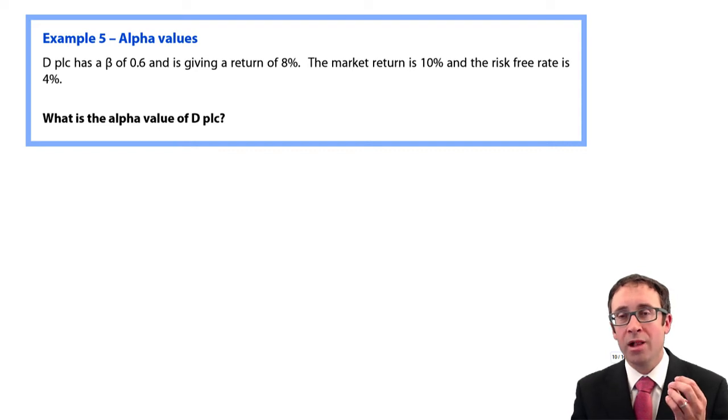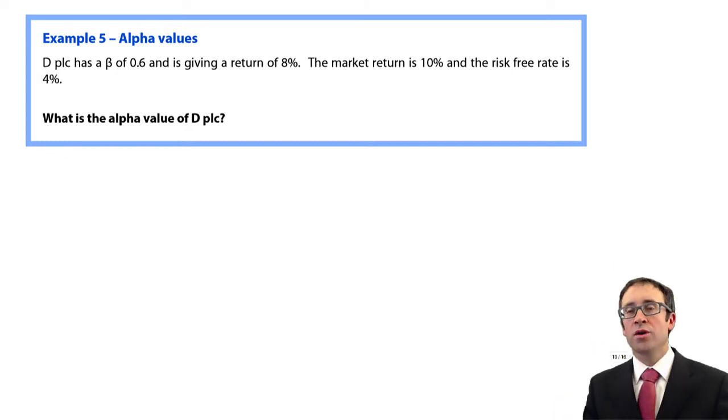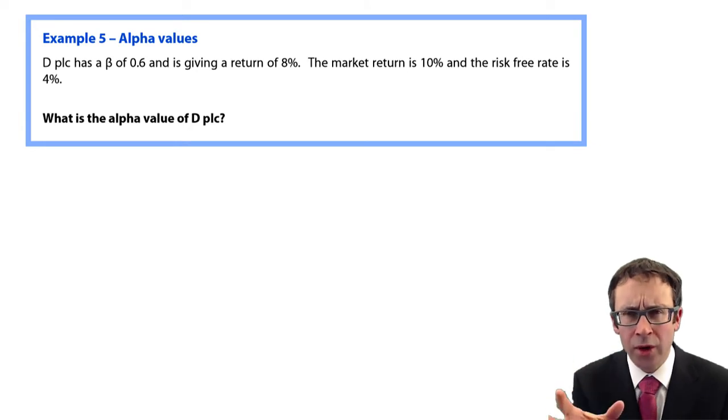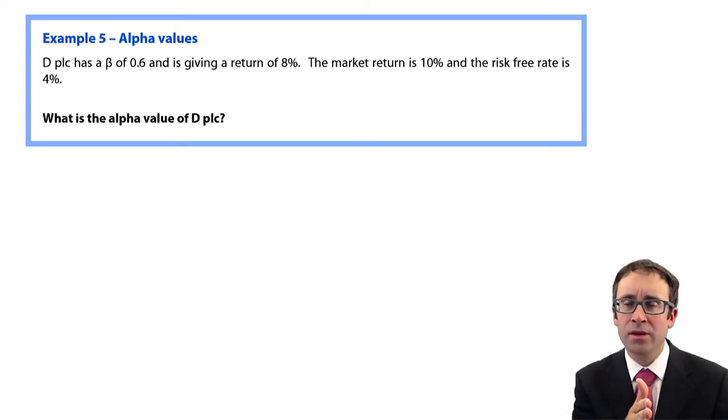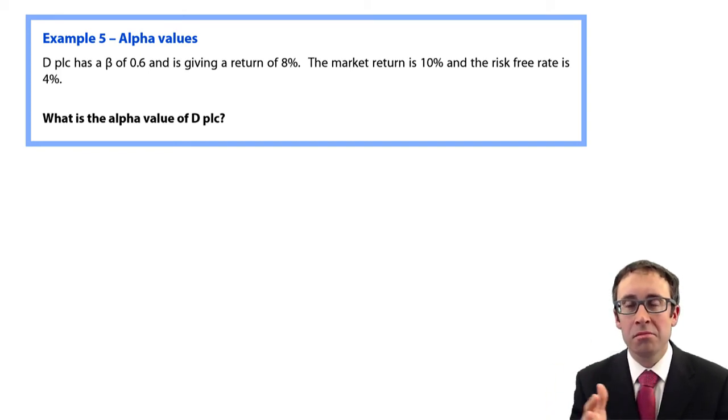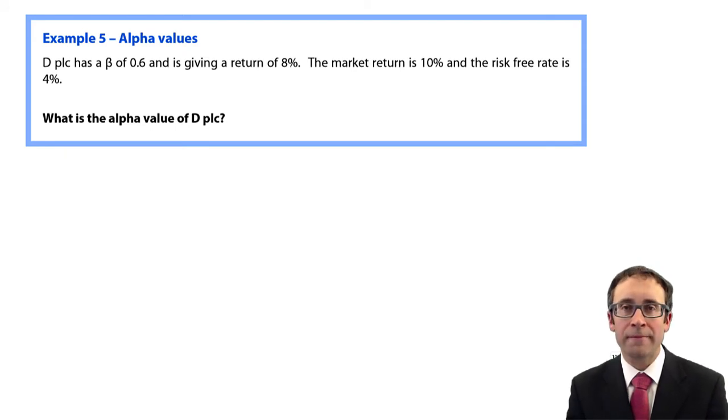As well as knowing what the alpha value is in terms of how to calculate it, you would also then be expected to interpret it. If your actual return is greater than your theoretical return, then surely you'd want to buy into that investment. So if it is a positive alpha value, we will buy the shares. But if the actual return is less than what your theoretical return is stating, then that's a negative alpha value and you would not buy that investment. And if you held it, you'd likely be going through there and selling it so you can invest the proceeds elsewhere and get your return that you require.